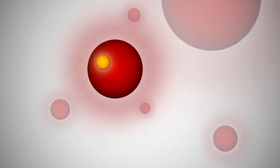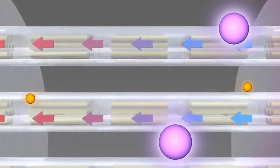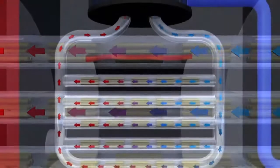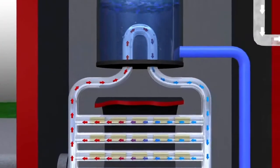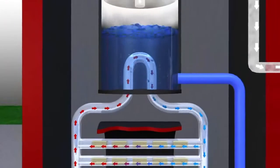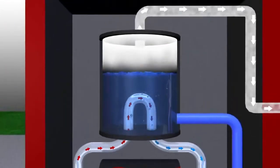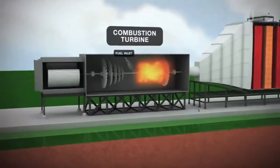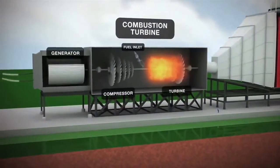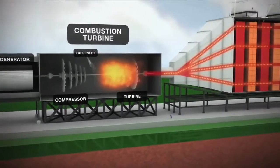Akan tetapi juga bisa didapatkan dari energi nuklir, atau energi panas sisa dari keluaran turbin gas di dalam sebuah siklus gabungan turbin gas dan siklus rengin, atau yang biasa kita kenal sebagai combine cycle.